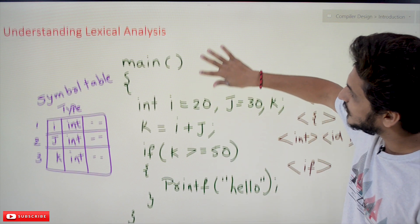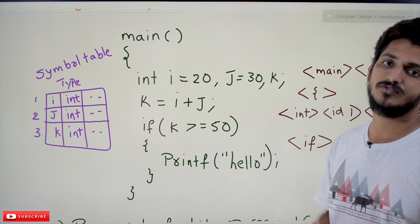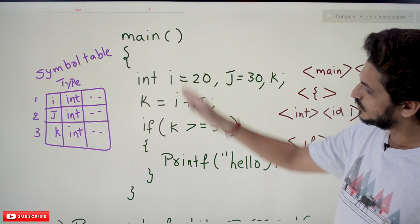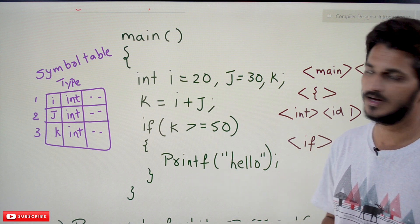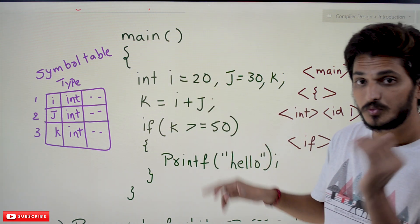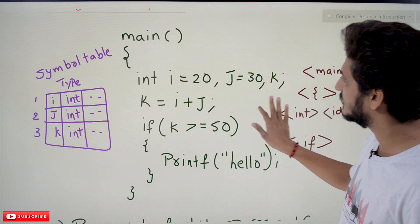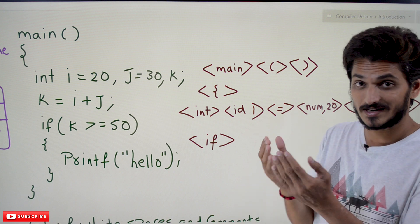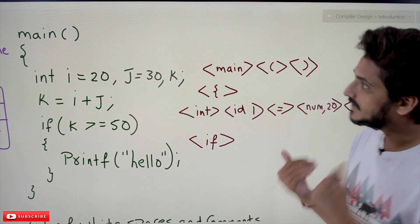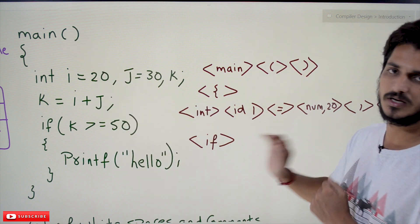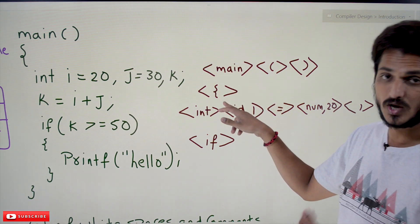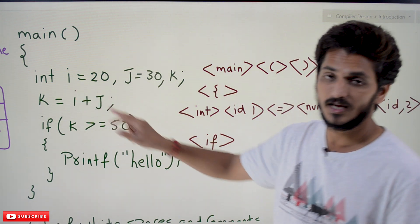Coming to today's class — lexical analysis phase. Let's take an example and understand. This program is given as input to the lexical analysis phase. We are choosing the C language here, but you can choose any language. The source program is given as input to the lexical analysis phase. The input is: main, open bracket, closed bracket. The output generated by the lexical analysis phase reads characters one by one: m, a, i, n — 'main' has been separated. Then the open bracket symbol is separated, then the closed bracket symbol. Next, the flower bracket is separated, and then 'int' is separated.